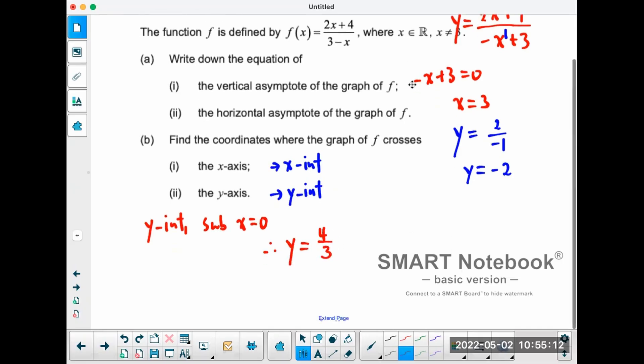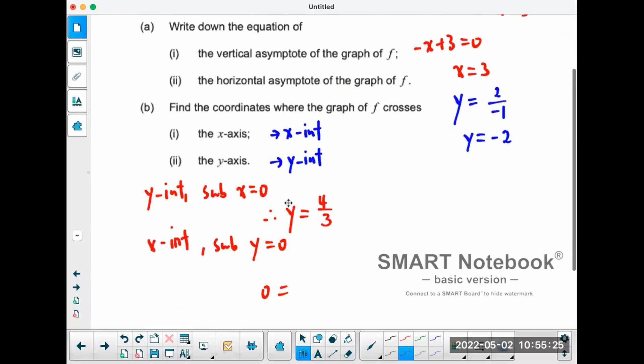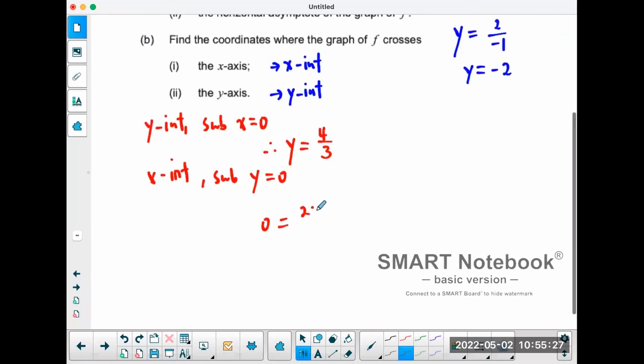For the x-intercept, you have to set the y value equal to zero. So when the y value is equal to zero, zero equals—what's the equation again?—two x plus four over negative x plus three. Now when you bring the denominator the other side it's gone, so just left with two x plus four. So x is going to equal to negative two. So this is the x-intercept, that's the y-intercept.